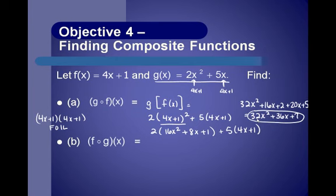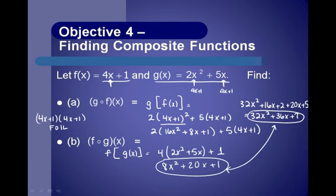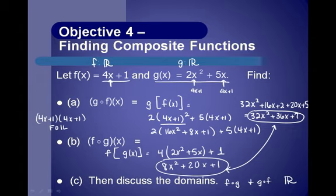For f of g of x, we start with the f function, 4x plus 1, and plug in g of x — which is 2x squared plus 5x — everywhere we had an x. That gives 4 times (2x squared plus 5x) plus 1, which simplifies to 8x squared plus 20x plus 1. Notice again that f of g does not equal g of f. Since there are no fractions or square roots in either function, the domain of both f of g and g of f is all real numbers.